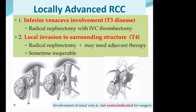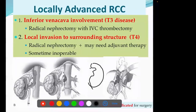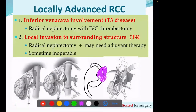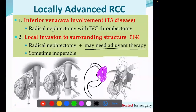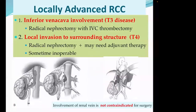For T4 disease where the tumor went out of Gerota's fascia and involved surrounding structures, we can still do radical nephrectomy, but after surgery, depending on the situation, if the margin is still positive or other organs are involved, we have to add adjuvant therapy after surgery. Sometimes the tumor is so adherent to surrounding structures involving large structures like pancreas or colon - in that case, they may be inoperable. Sometimes they are operable, sometimes inoperable in the case of local structure involvement. But if it is still inside the IVC, we can try for radical nephrectomy with IVC thrombectomy.